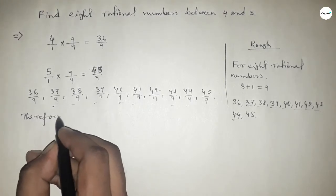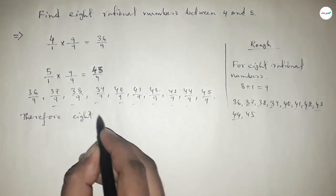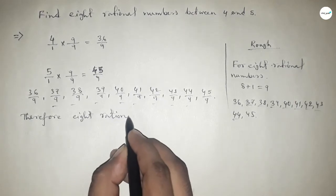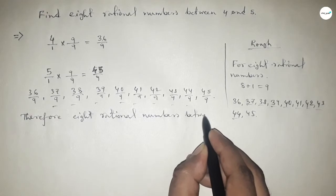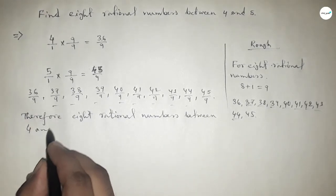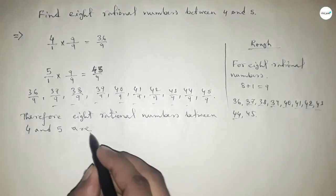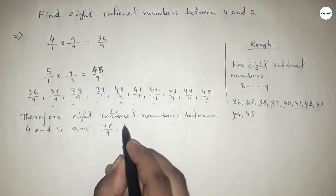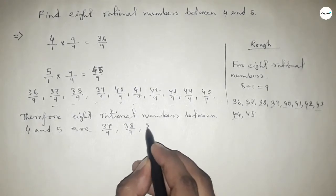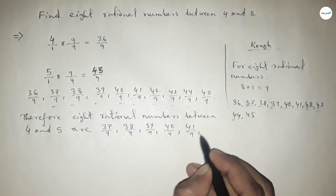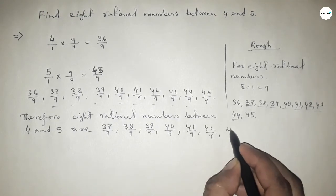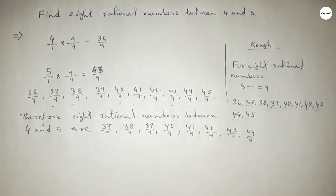Therefore, eight rational numbers between 4 and 5 are: the first one is 37 over 9, 38 over 9 up to 44 over 9. So this is the process to find out eight rational numbers between 4 and 5.